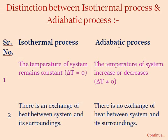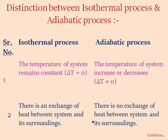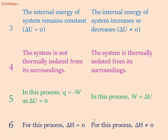First point: in an isothermal process, the temperature of the system remains constant, therefore delta T equals zero. In an adiabatic process, the temperature of the system increases or decreases, so delta T is not equal to zero. Second point: in an isothermal process there is an exchange of heat between the system and its surroundings, but in an adiabatic process there is no exchange of heat between the system and surroundings.